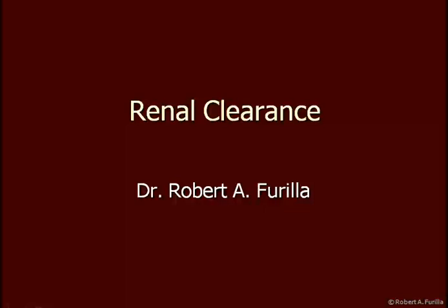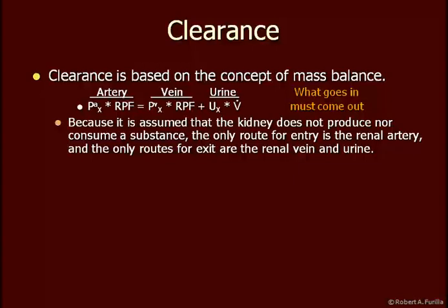Today I'm going to talk about renal clearance. Clearance is based on the concept of mass balance — in other words, what goes in must come out. What goes in is found in the arteries. Blood fusing the kidney is the entry point, and that equals the amount coming out. It can either come out in the veins or it can come out in the urine. The sum of these two exit routes must equal the entry route.